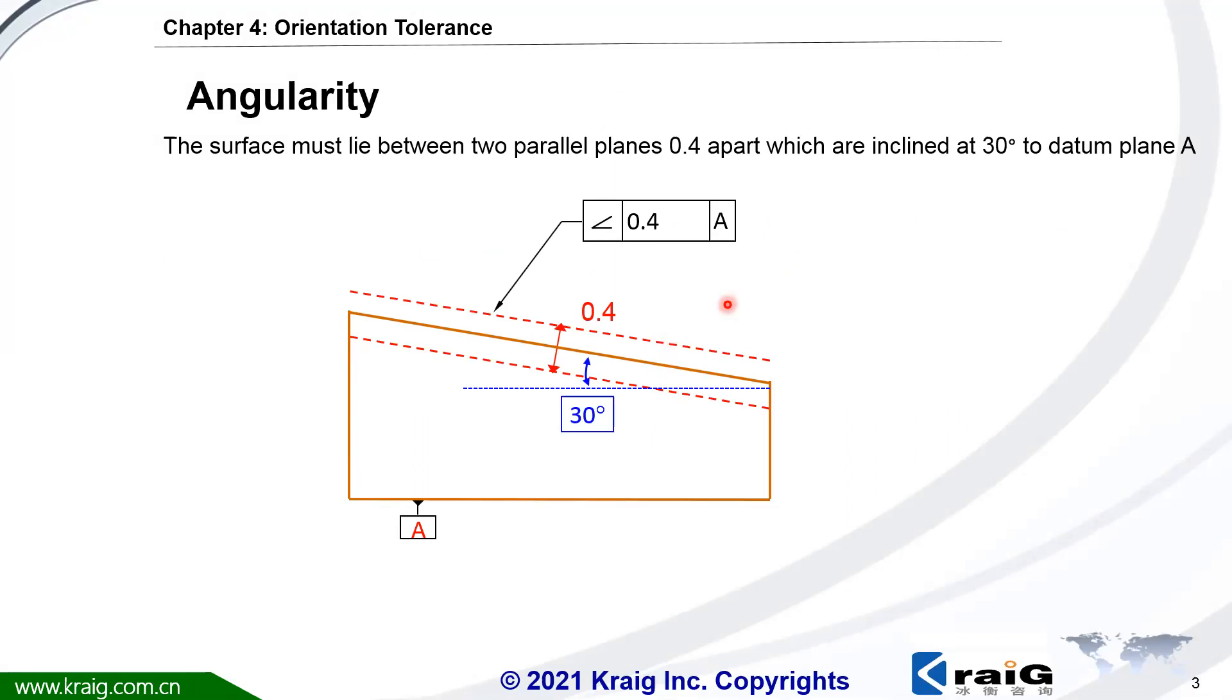Let's have a look at what is angularity. The symbol is this. This is the tolerance value. Here's the datum.